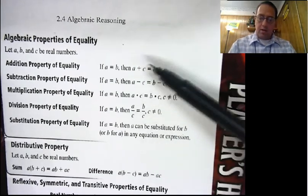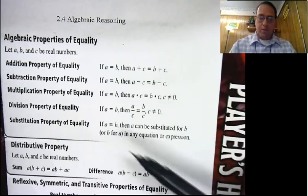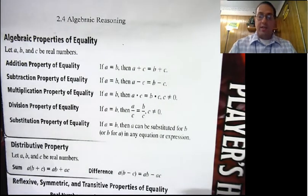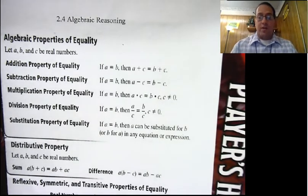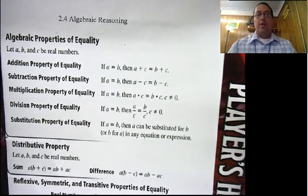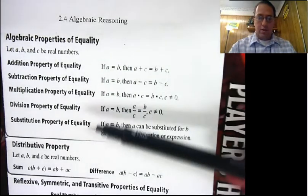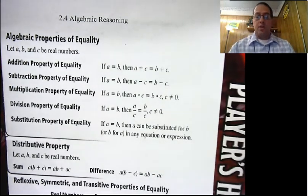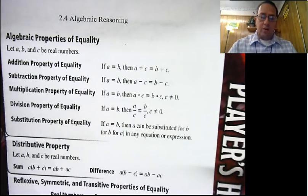All of these we've been doing for years. Substitution property of equality: if a equals b, then a can be substituted for b, or b for a, in any equation or expression. If you know that x equals 5, then anywhere in your equation you have an x, you can put a 5 in there. You've been doing that for years — just plug it in. The technical term is substitution.